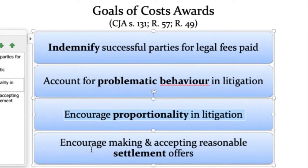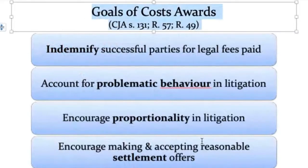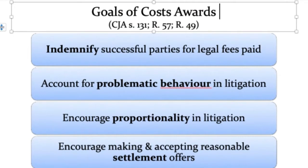Finally, we have the goal of encouraging parties to make and accept reasonable settlement offers. Just like proportionality, the promotion of settlement is a policy that runs through the rules of civil procedure and the cases that interpret it. So we've got a lot on the table with this one fairly modest remedy — making a cost award — and it's got a lot of work to do: indemnify successful parties, deal with problematic behavior, encourage proportionality, and encourage making and accepting reasonable settlement offers. All of these goals can push in different ways — they can work in favor of a plaintiff or in favor of a defendant.